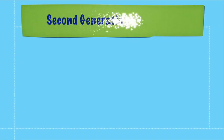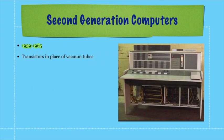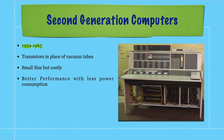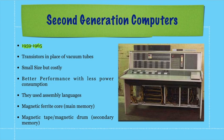Moving forward to second generation computers — the time period was 1959 to 1965. The key difference from first generation was that transistors were used in place of vacuum tubes for making CPUs. As you can see, second generation computers were relatively small in size compared to first generation, but were still costly. They had better performance with less power consumption. Assembly language was used in addition to machine language, and main memory was magnetic ferrite core, while secondary memory was magnetic tape or magnetic drum.